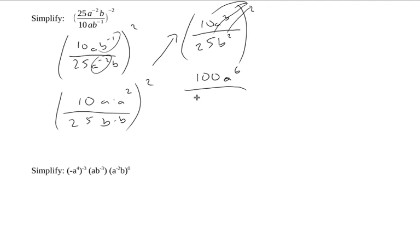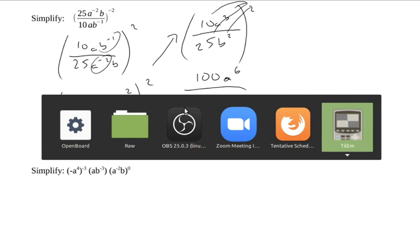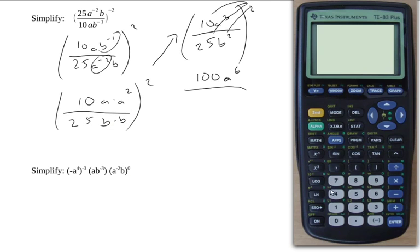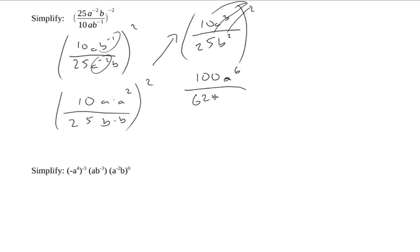25 squared is, I think I need to pull up my calculator. 625. I should have known that. And b squared squared is b to the 4th. That's 2 times 2 again.